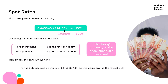The bank or whoever you are using to change money will always win. For example, if we were paying Swedish krona we'd use the rate on the left - I choose that 8.4458 number. Does that give us the fewest Swedish krona? If we were receiving Swedish krona, we'd use the rate on the right - that 8.4924 - which gives us the fewest dollars when we translate those Swedish krona back into dollars and divide by that number. So those are the correct rates.